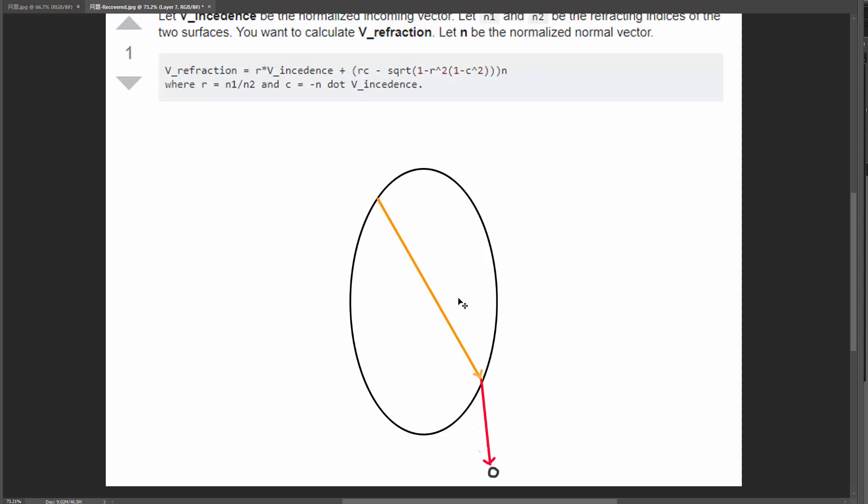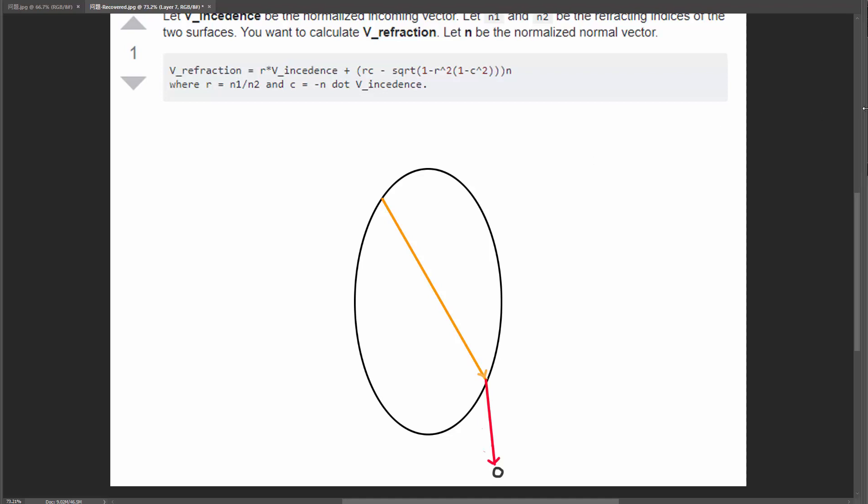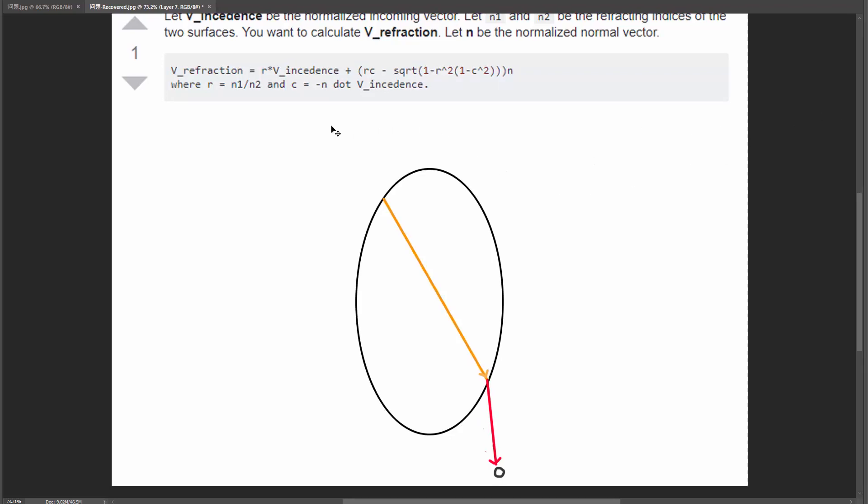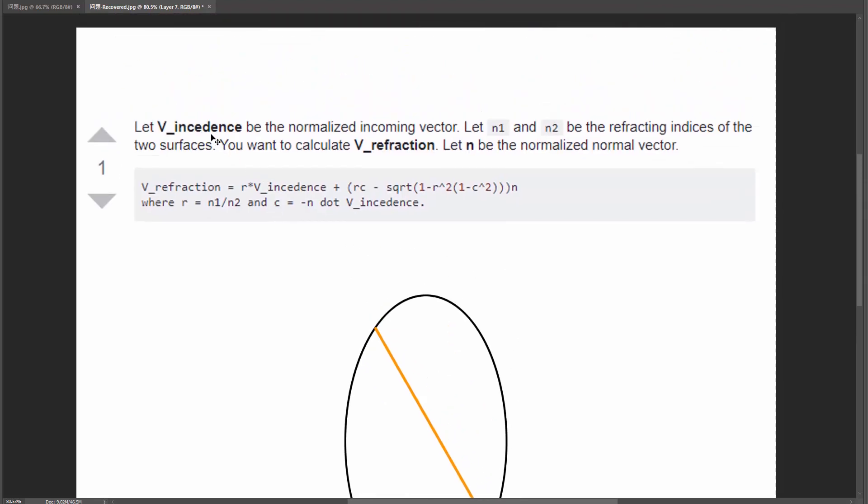There are two things happening: one is that the direction of the light refracts, and another is that there is a depth between the outer layer surface and the inner layer. The actual mathematics is more complicated than just applying the image on the surface of the model. We have to mimic that using some mathematical tricks.